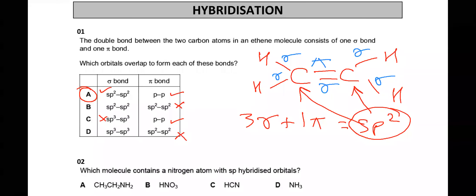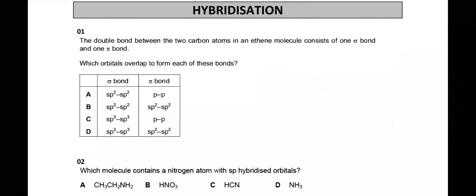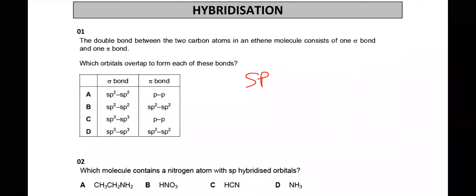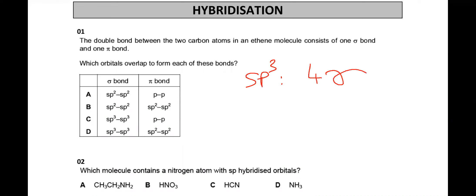Let's revise this concept of hybridization, which is in your syllabus. First is SP3 hybridization — when there is SP3 hybridization, it will make four sigma and zero pi bonds, so it will be SP3 hybridized. If SP2 hybridized, it will make three sigma and one pi bond.